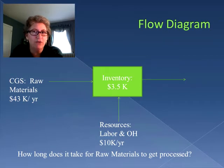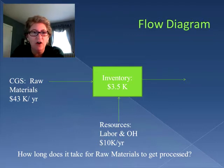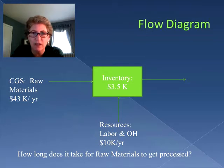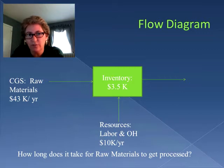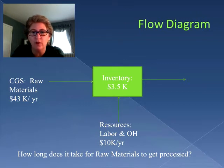Looking at this flow diagram, we can actually take information found on an accounting statement and look at it in terms of process flow. If we're looking at cost of goods sold, many times it's broken down by how much is being spent on raw materials, how much is going to be spent on purchased parts, and so forth. We can also take a look at how much is left in inventory. In this one we're just going to look at the inventory for the raw materials.